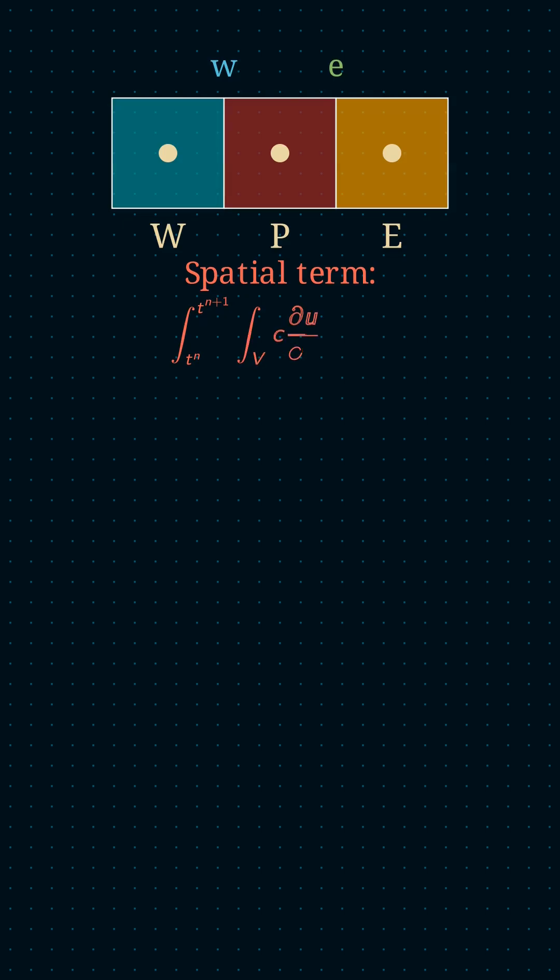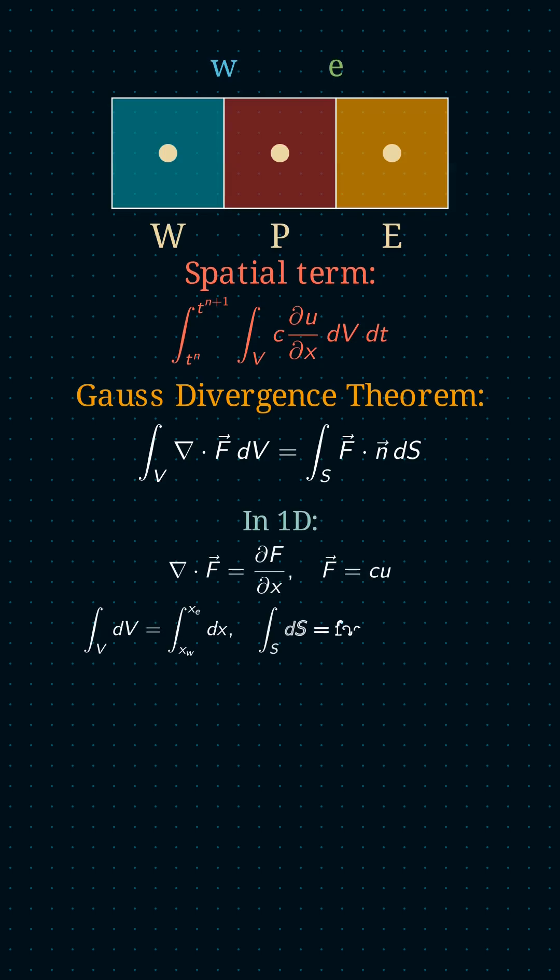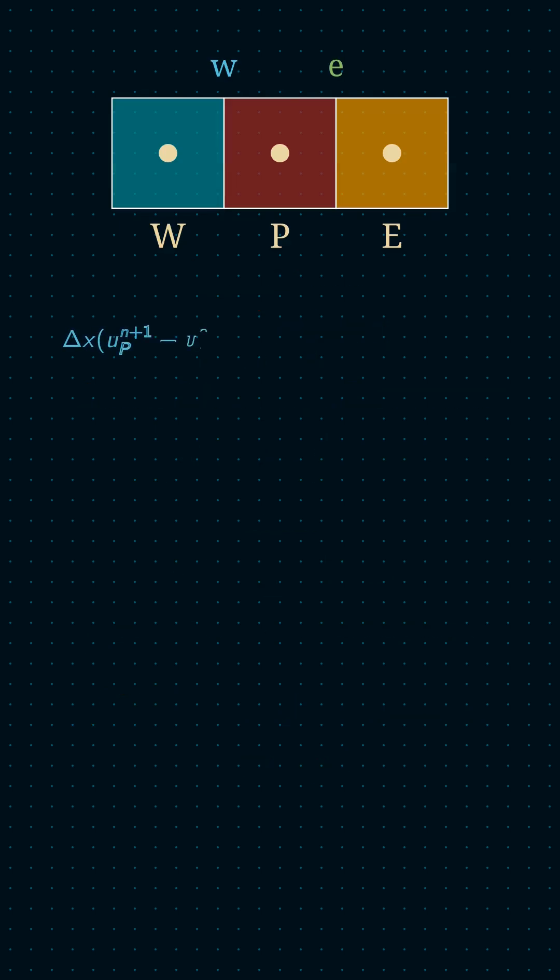If we talk about the integration of the spatial term, we use the Gauss divergence theorem which helps us convert the volume integral to the surface integral, which helps us make sure that we balance out the flux and therefore making sure that the conservation principle is applied.